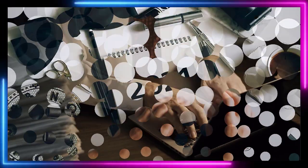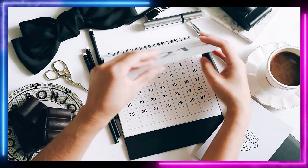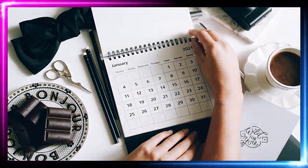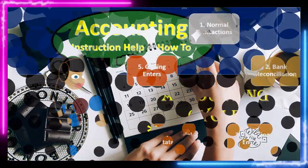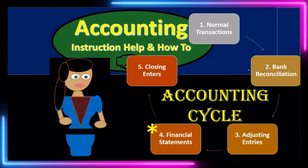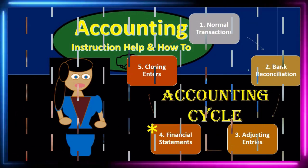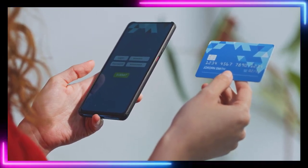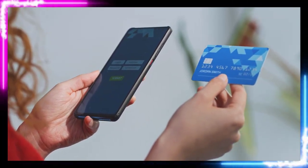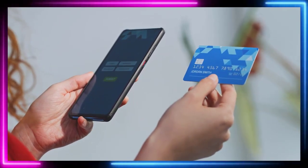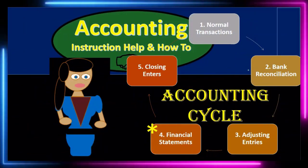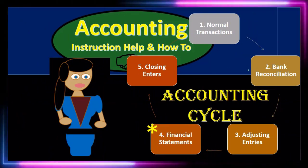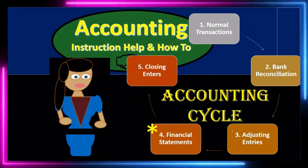Everything else is basically happening at the end of the month. At the end of the month, we're going to reconcile the bank accounts. Bank reconciliation is included as a step in and of itself because it's really a huge internal control, second only to the double-entry accounting system itself. It really defines that point in time when we're moving from normal business transactions to the next step: the adjusting journal entries.